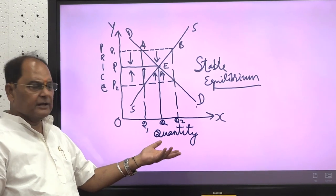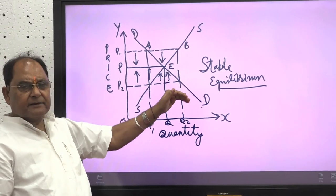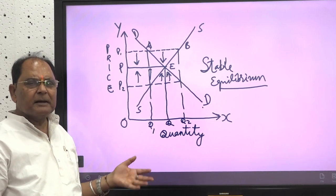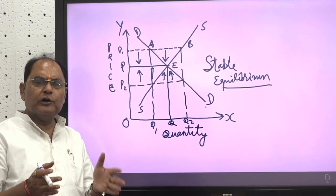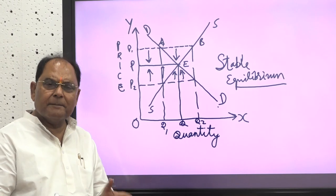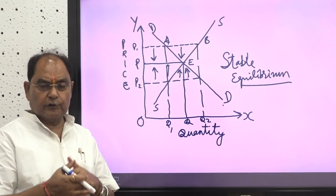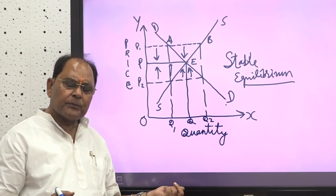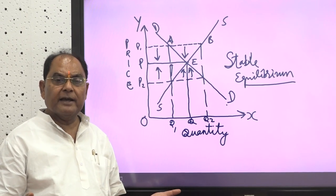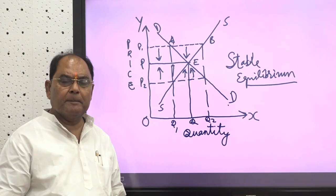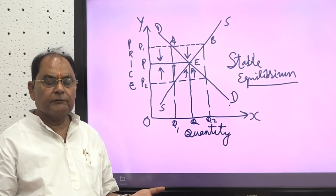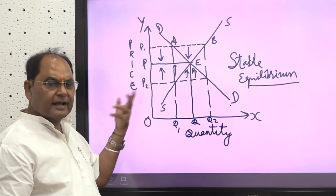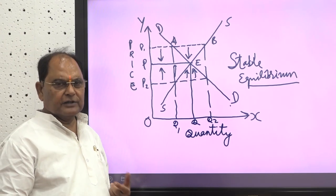For unstable equilibrium, the curves are reversed, and there will be a tendency of movement further in the same direction. Regarding neutral equilibrium, a diagram can be drawn as well. As stated earlier, equilibrium in itself is not important; what is more important is the tendency towards equilibrium and the forces that take you there. Equilibrium is the point of maximum advantage — maximum profit for the business and maximum utility for consumers.